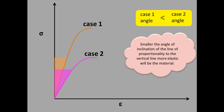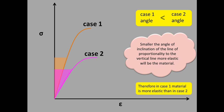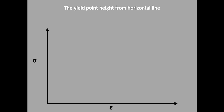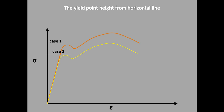Smaller the angle of inclination of the line of proportionality to the vertical line, more elastic will be the material. Therefore, in case 1 the metal is more elastic than in case 2. Now observe the yield point height from the horizontal line — this is case 1 and this is case 2 yield point height. In case 1, height is more from the horizontal line than case 2.